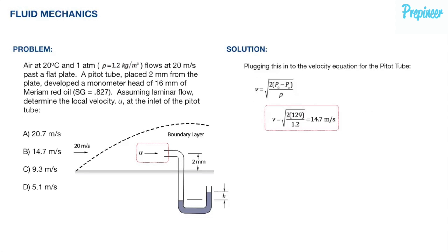Plugging this value into the velocity equation for a pitot tube, we find that the velocity at the inlet of the pitot tube is 14.7 meters per second.